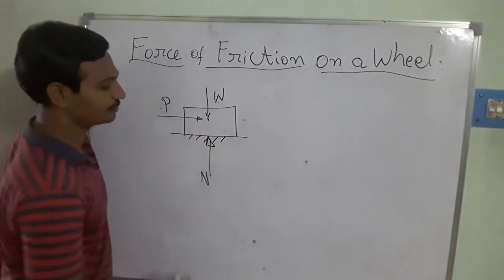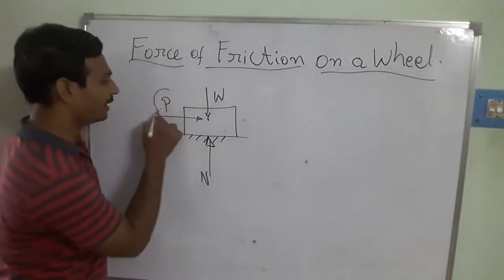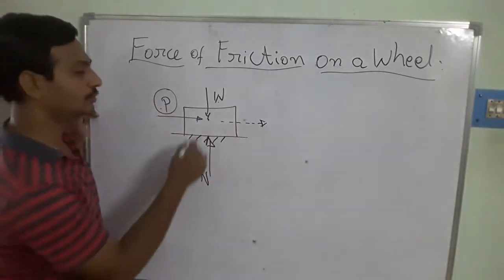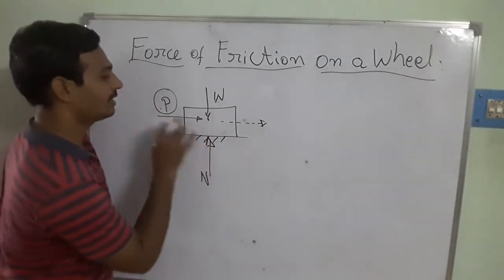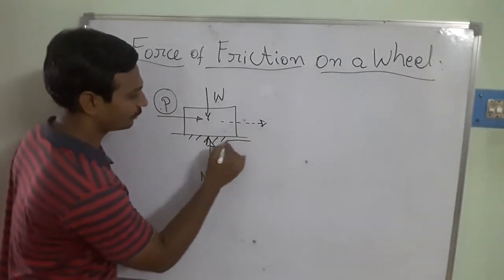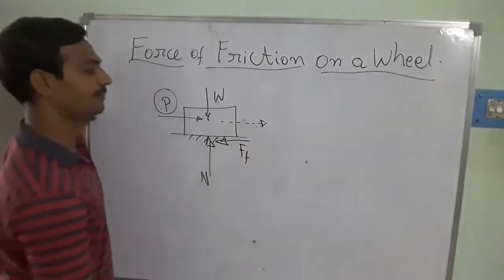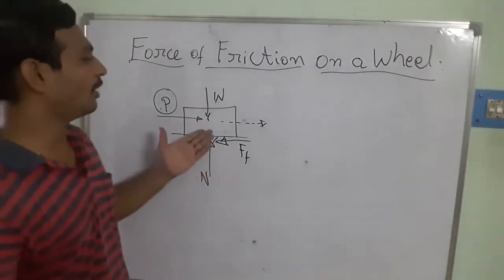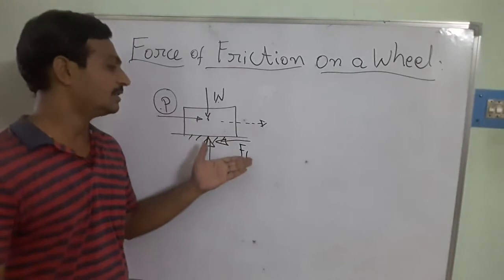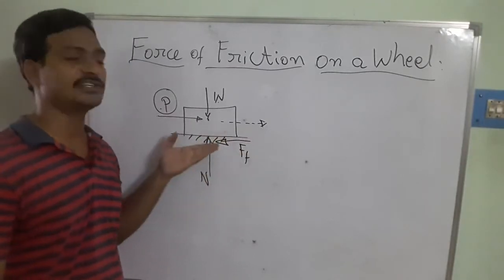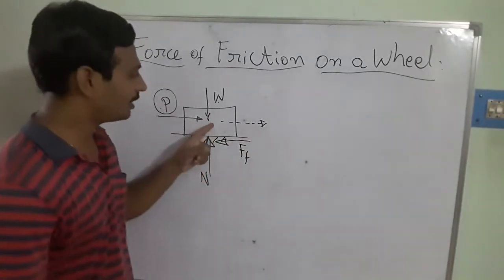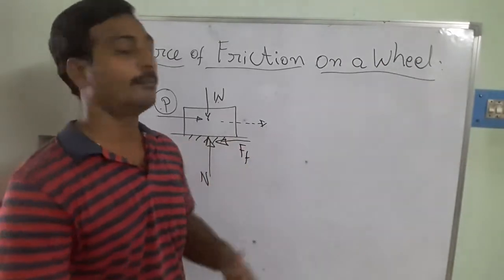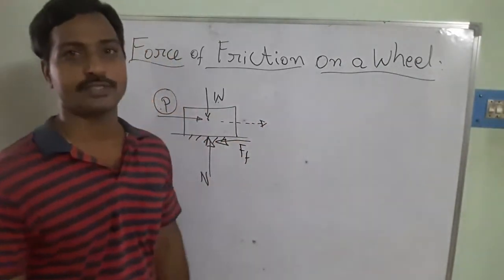Because of this applied force, the body is trying to move in the direction of impending motion. The frictional force F opposes this motion. Because the force acts tangentially and the geometry of a rectangular body does not allow rolling, the body slides on the horizontal surface rather than rolling.